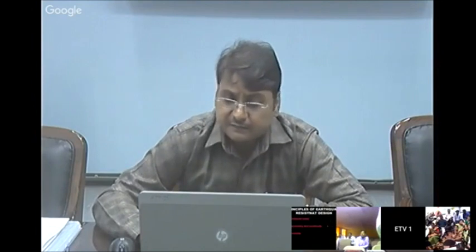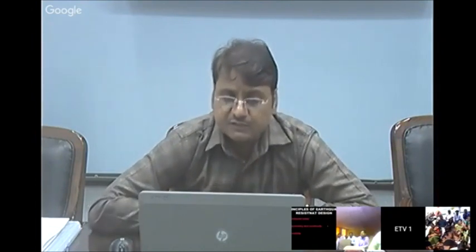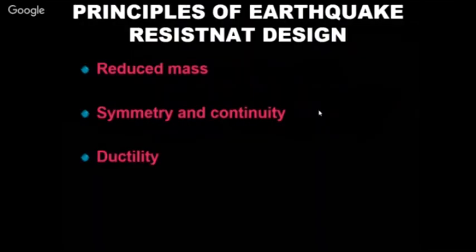Key principles for earthquake-resistant housing design include: reduce mass — lighter buildings sustain less damage; ensure symmetry and continuity; and provide ductility — a building that can tolerate some movement is safer than a rigid one. Rigid load-bearing structures with mortar joints of only 1–2 mm have very low strength at connections, and when connections fail, the wall fails and the building collapses.